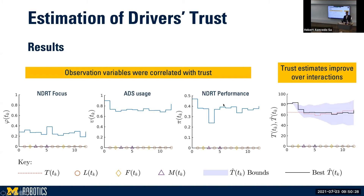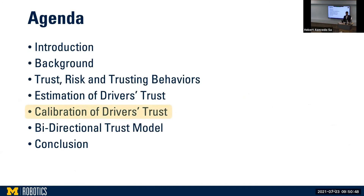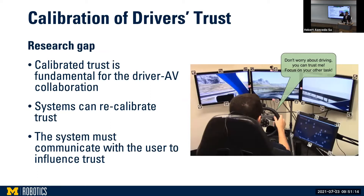Importantly, to implement this estimator on a real vehicle, we would depend only on having an eye-tracking system and integration of the ADS with the tasks executed by the driver. Given that we now know how to estimate trust, we can start thinking about how to influence trust and, eventually, how to calibrate trust in real time to avoid inappropriate reliance on AVs. A calibrated level of trust is fundamental for the driver and the AV to collaborate as a team — AVs can estimate the user's trust and react to it to recalibrate.